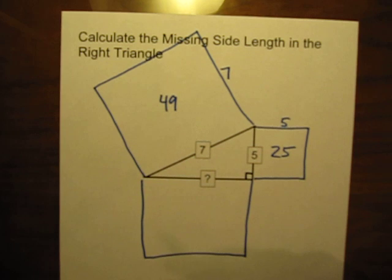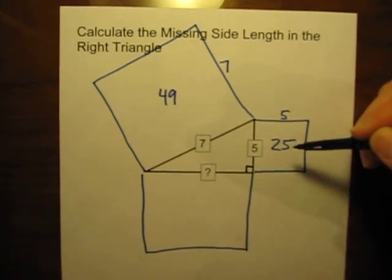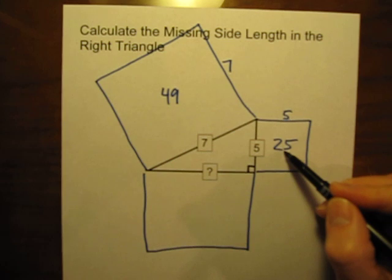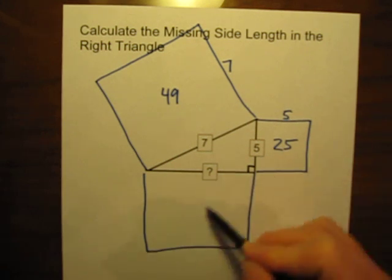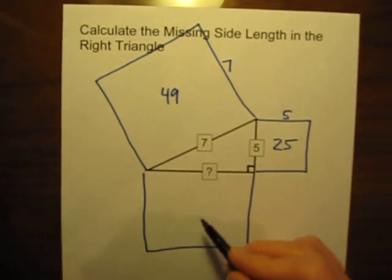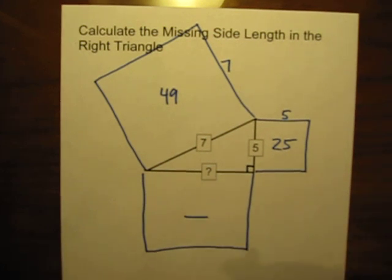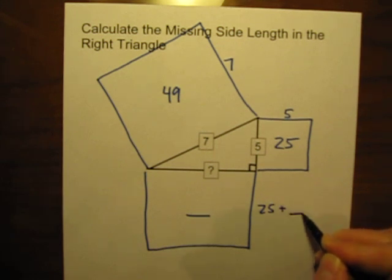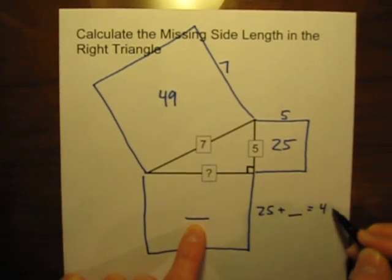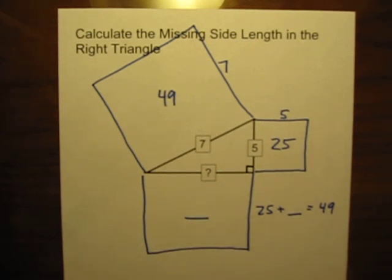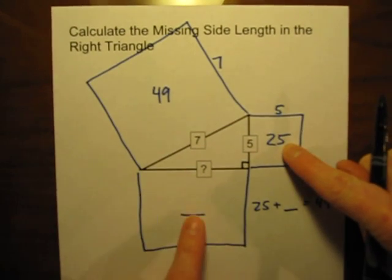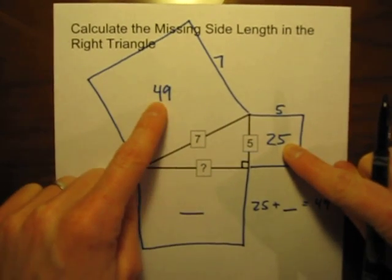A common error that people often make is they just will go right into the Pythagorean Theorem saying this square plus this square equals this square. But remember, it's the square of the legs added together equals the hypotenuse square. So, really what we want to do here is 25 plus what equals 49? The area of this square plus this unknown area of this square equals 49.